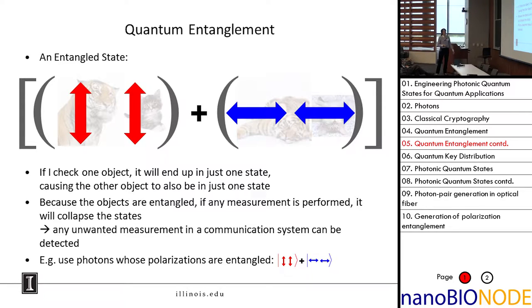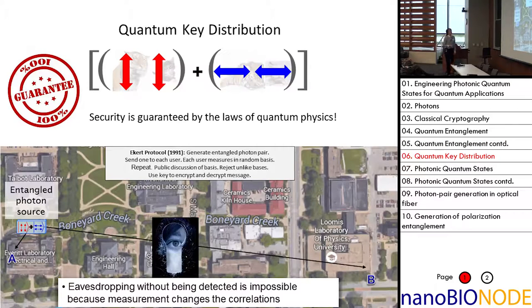Because they're in this special entangled state, if any measurement is performed, it collapses the states. This allows us to detect if someone has eavesdropped on our communication link. Of course, we're not going to send tigers and kittens over our communication link. We're going to send photons. The information is encoded in the polarization of the photons. This is a polarization entangled photon pair, where if you measure photon 1 to be vertically polarized, that causes photon 2 to also be vertically polarized, and the same for horizontal.